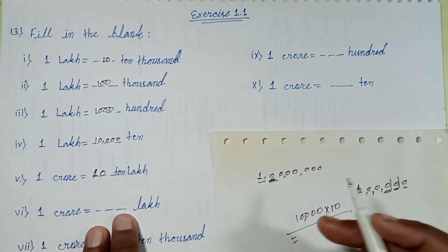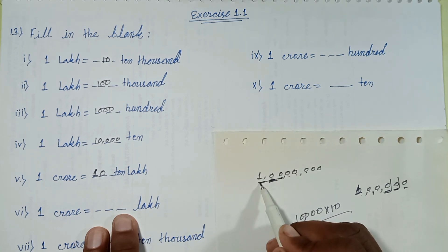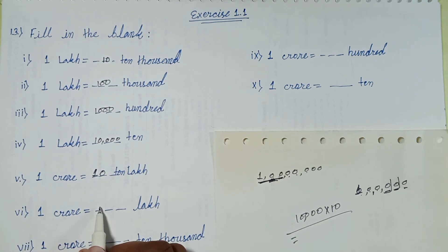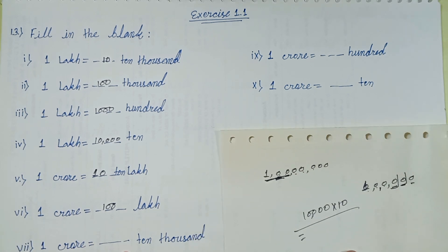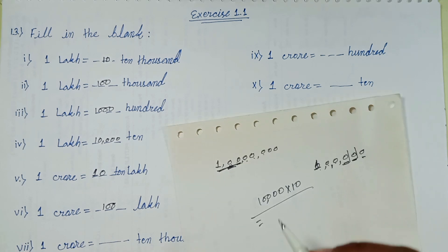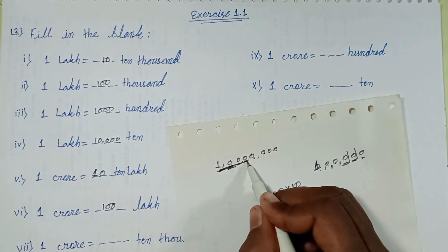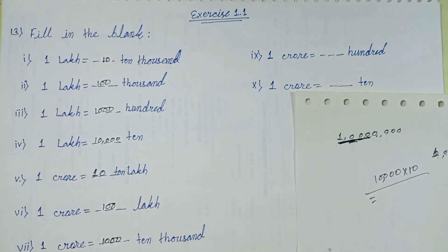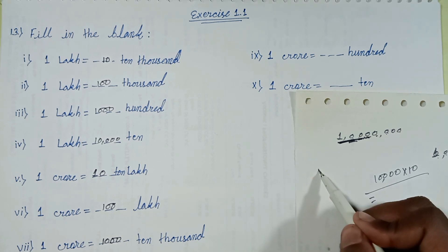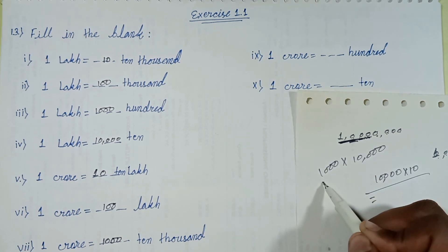One crore equals dash lakh. Ones, tens, hundreds, thousands, ten thousands, lakh — with three digits: hundred lakh, hundred lakh equals one crore. Question number seven: one crore equals how many ten thousands? Thousand times ten thousand, thousand multiplied with ten thousand, equals one crore.